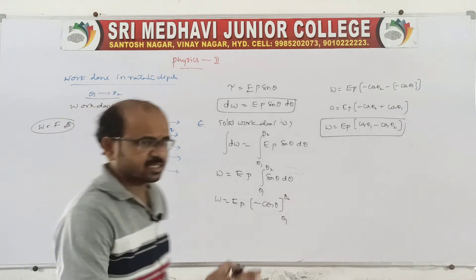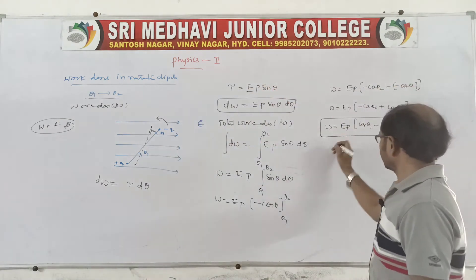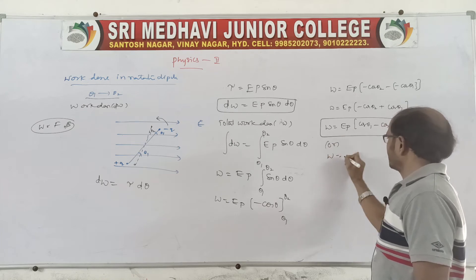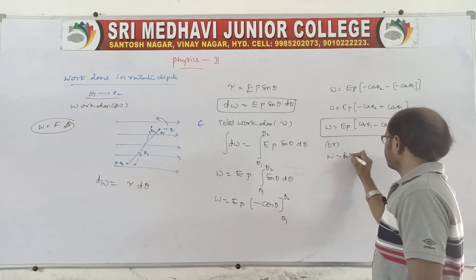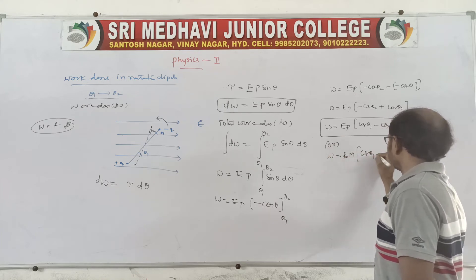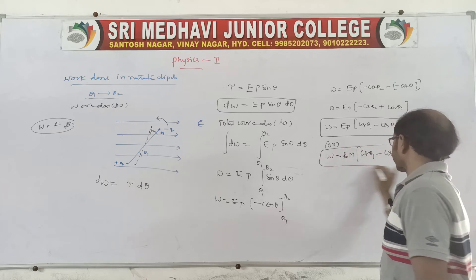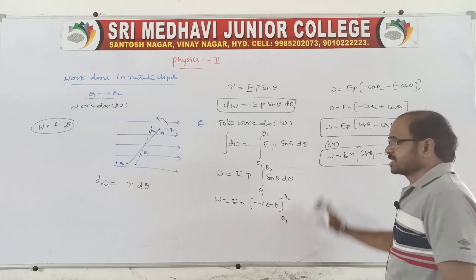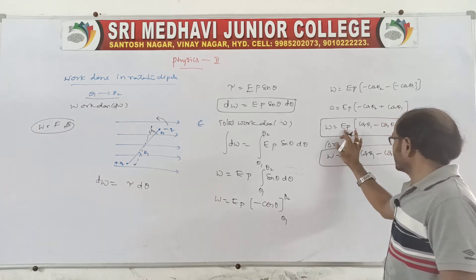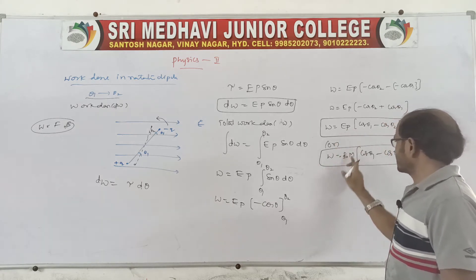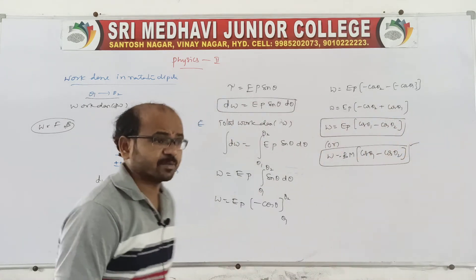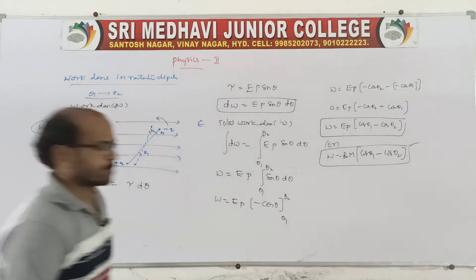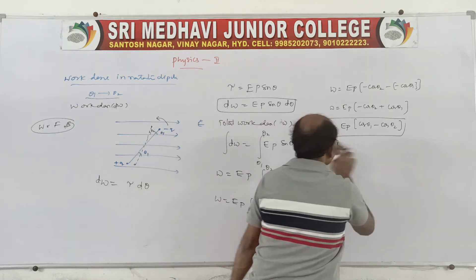The same derivation applies in magnetism. In case of magnetism, work done = Bm(cosθ₁ − cosθ₂), where B is the uniform magnetic field intensity and M (capital M) is the magnetic dipole moment. This is directly analogous to the electrical case where E replaces B and p replaces M.